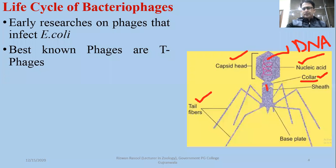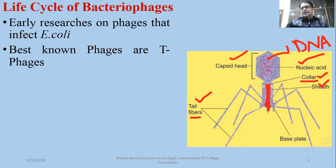At the head and tail junction there is a core protein structure. The outer portion is the sheath, shown in red, and the core protein works with DNA injection. The tail fibers are also protein in nature and help with attachment, while the base plate and base pins assist with landing on the bacterial surface.